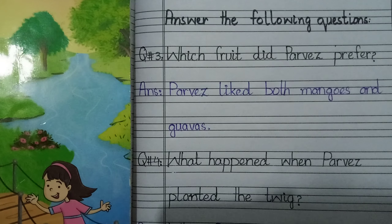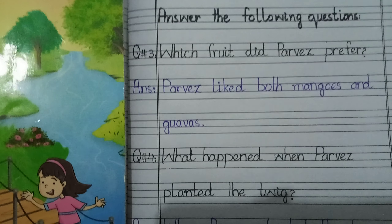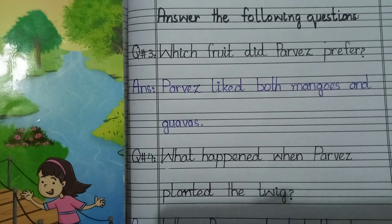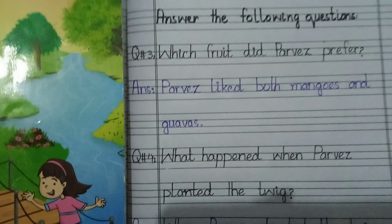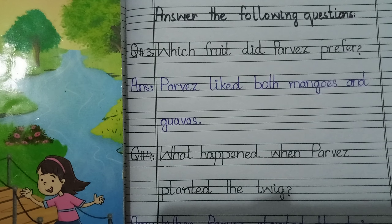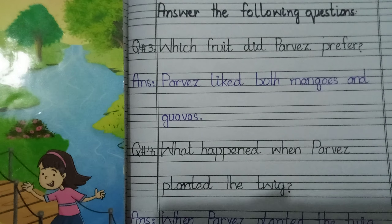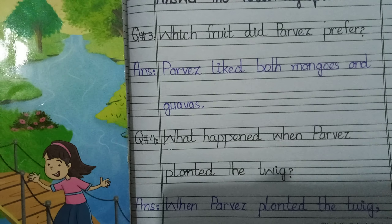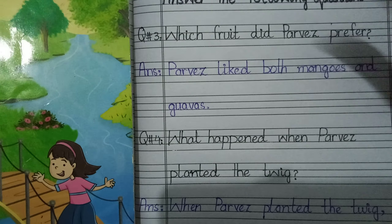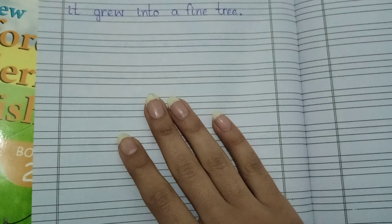Question number 4: What happened when Parvays planted the twig? The question asks what happened when Parvays dug the ground and planted the wooden twig. Answer: When Parvays planted the twig, it grew into a fine tree.